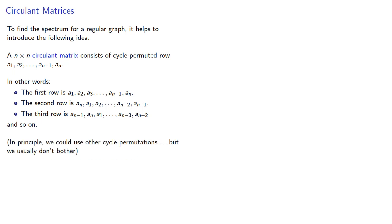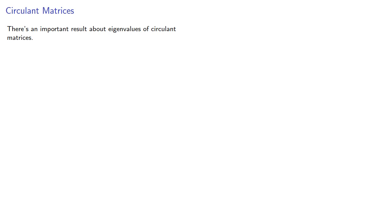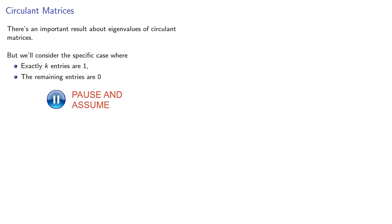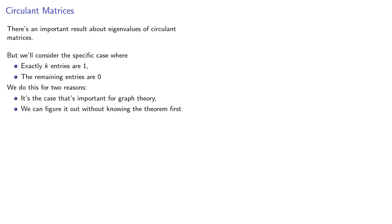In principle, we could use other cycle permutations, but we usually don't bother. There's an important result about the eigenvalues of circulant matrices, but we'll consider the specific case where exactly k entries are 1 and the remaining entries are 0. We do this for two reasons. First, it's a case that's important for graph theory, and second, we can figure it out without knowing the theorem first. Remember, it's the journey, not the destination.